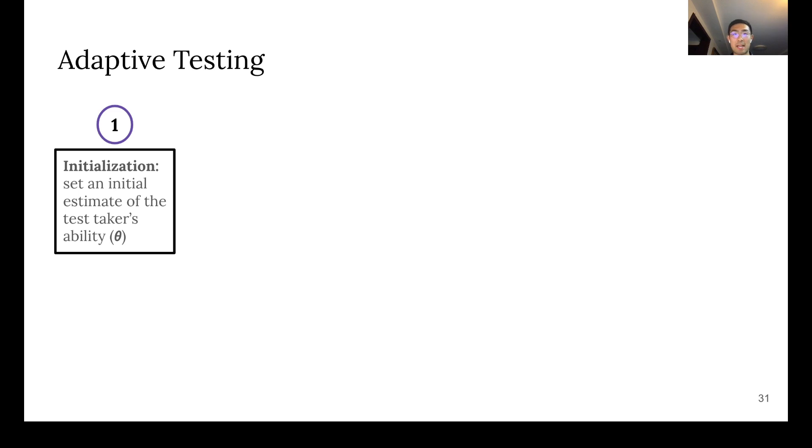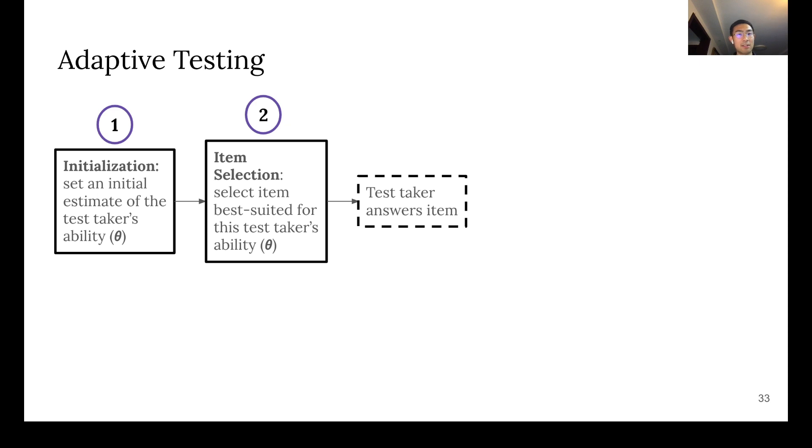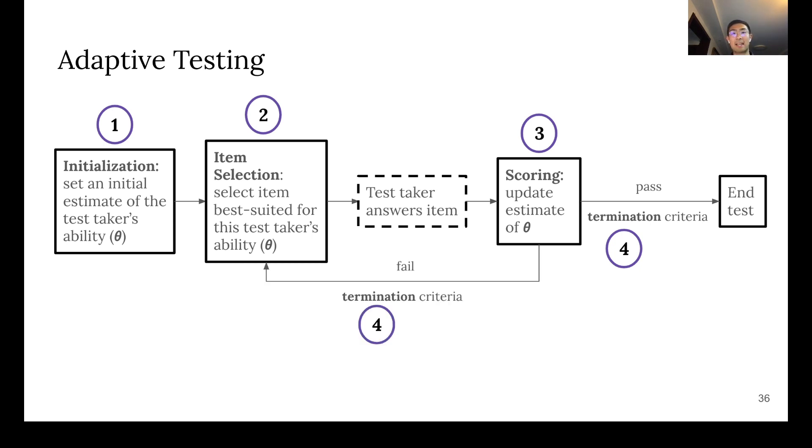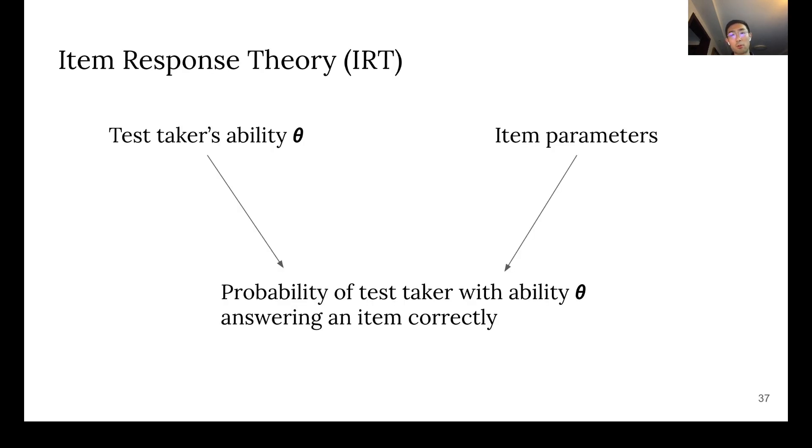Our adaptive test has four steps. The first one is initialization, where we set an initial estimate of the test taker's ability. The second step is item selection, where the best suited item for a particular test taker is selected. The test taker then answers the item, and we score the test taker by updating the estimate of their ability. If certain termination criteria are met, the test terminates. Otherwise, we select another item, and the process continues.